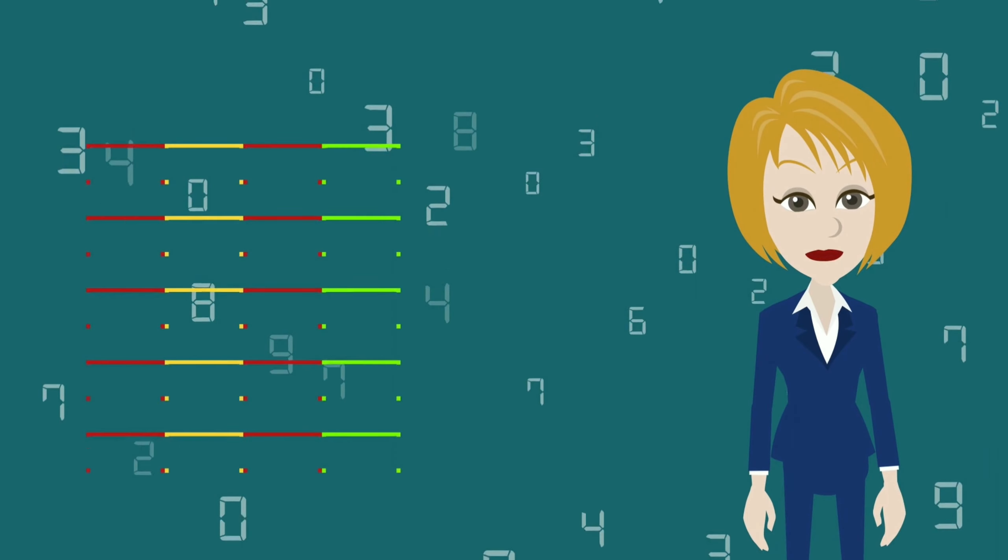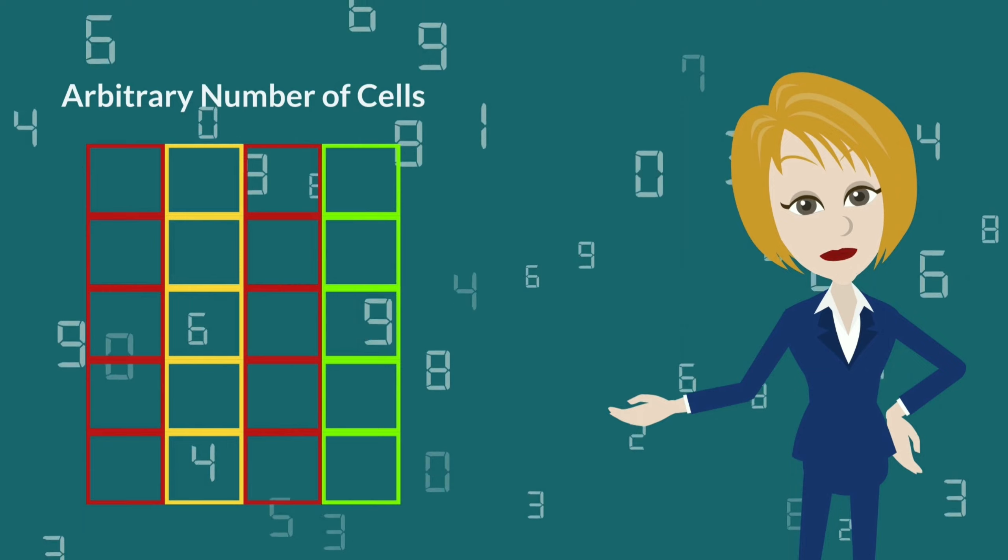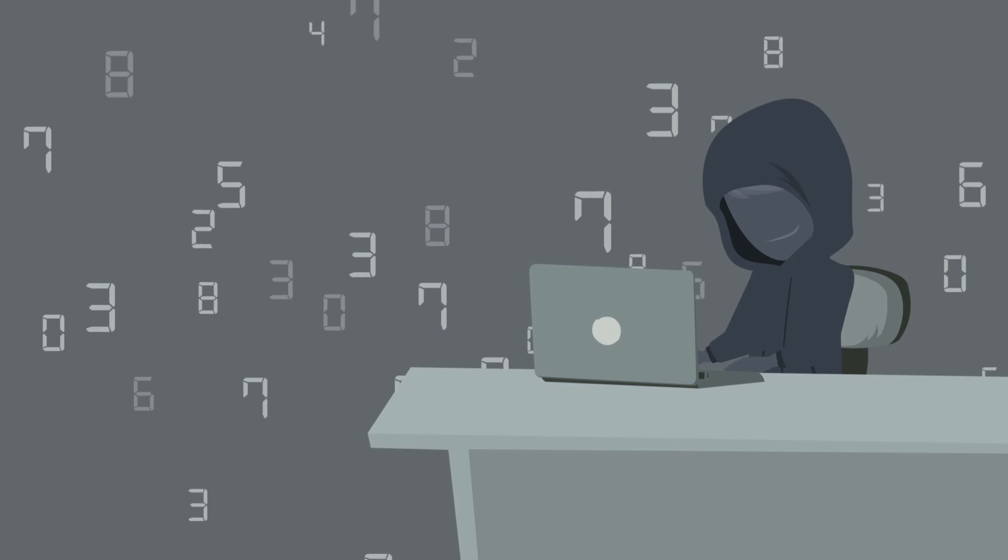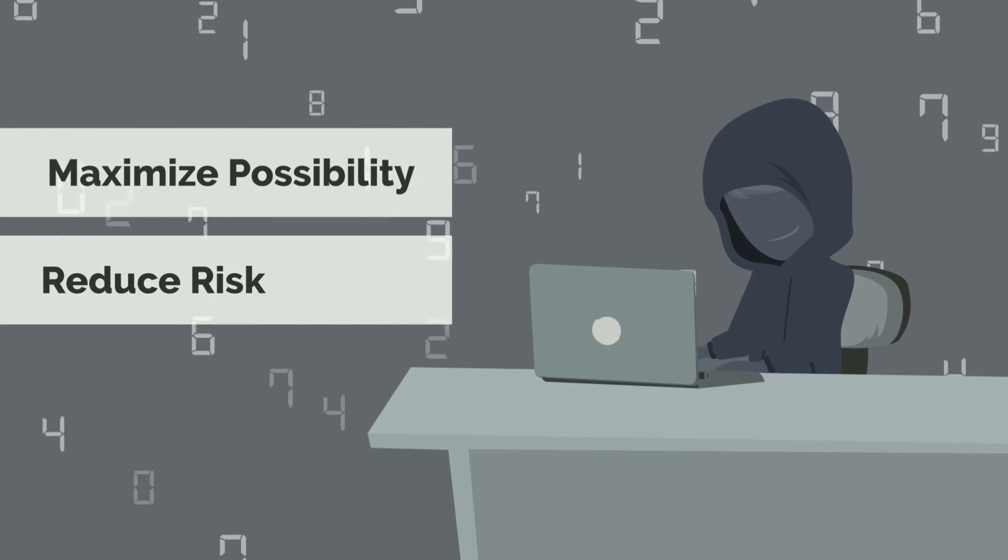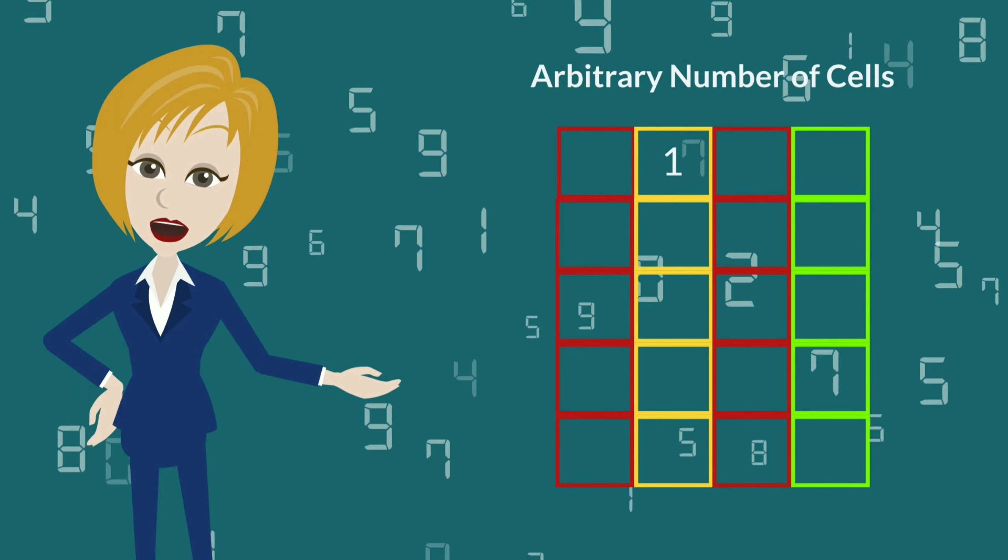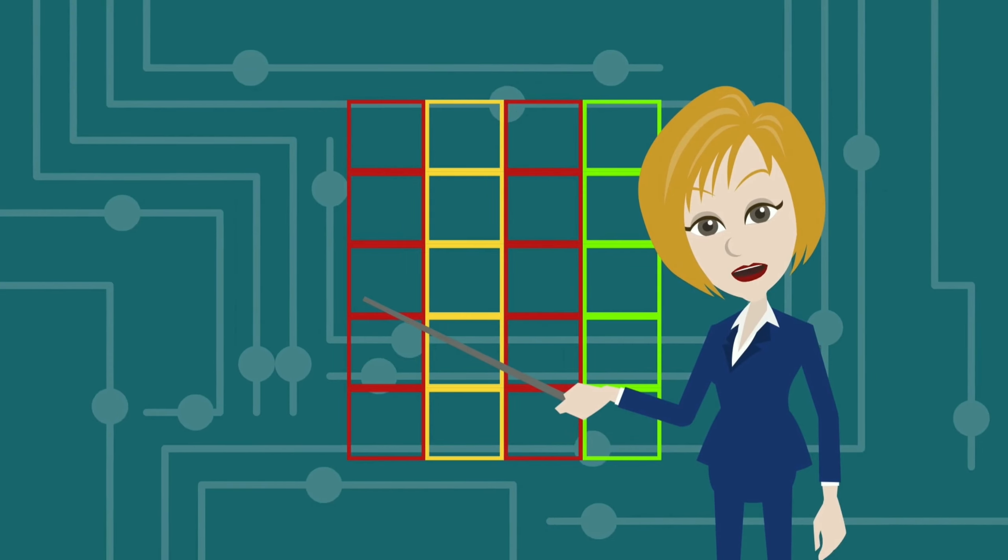Every block theoretically can comprise an arbitrary number of cells either vertically or horizontally. To maximize the number of possibilities and reduce the risk of hacking by brute force, you want a balance of the number of blocks and the number of cells in each block.